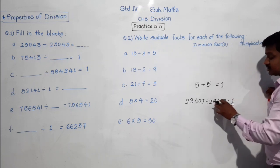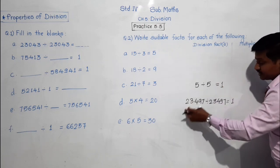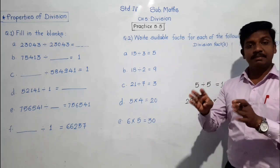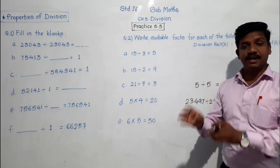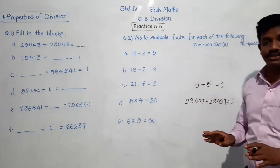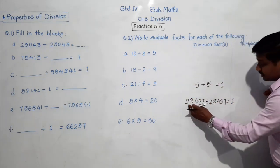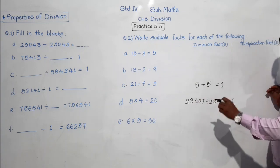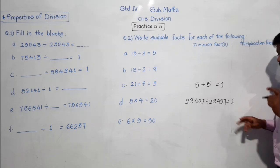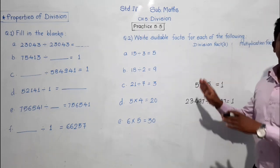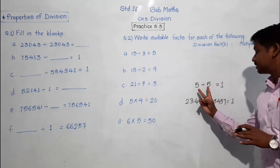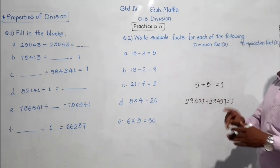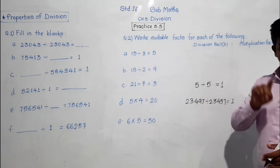Because 23,497 ones are 23,497. So though the number may be of any number of digits — 5, 6, 7, 8, whatever — if a number is divided by itself, then the answer is 1 only. You can observe this pattern any time. If the dividend and divisor are the same, then the quotient is 1. This is one of the properties.